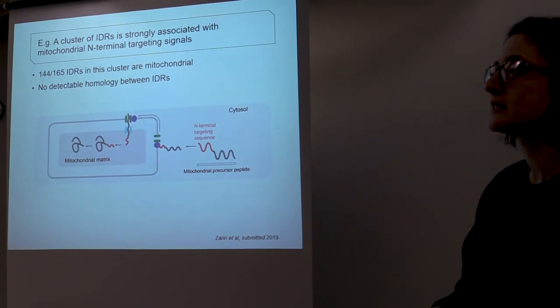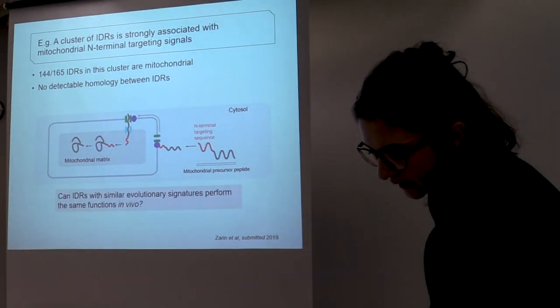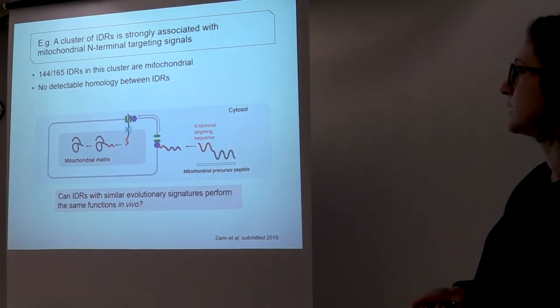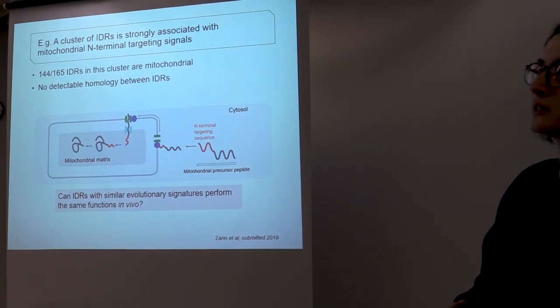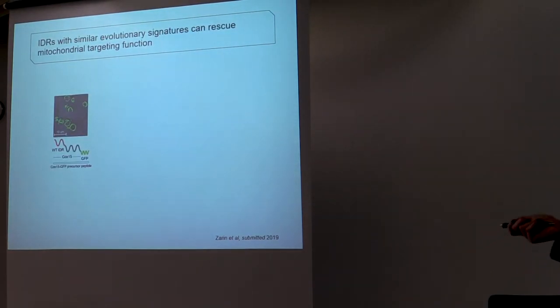So we thought we would test the functional signal that we're getting from our molecular features and from our clustering analysis by doing an in vivo experiment. So we asked, can IDRs with similar evolutionary signatures perform the same functions in vivo? So we actually tested this in our model budding yeast. Here I'm showing you just a wild-type precursor peptide for this protein called COX-15, and it has a GFP attached to it. So this is a mitochondrial localization.